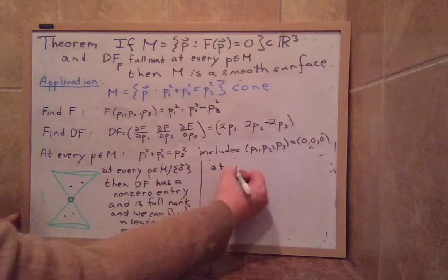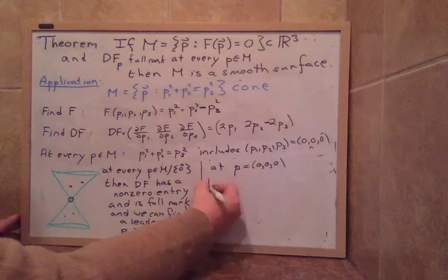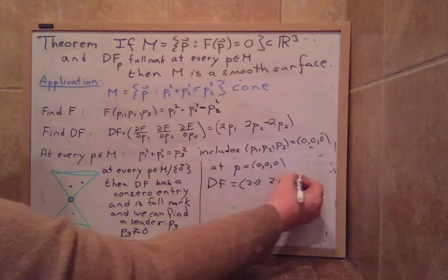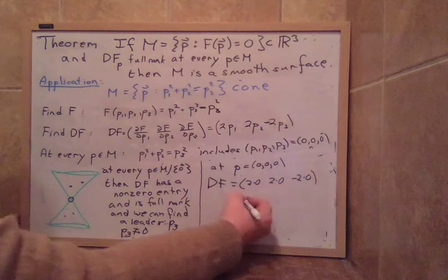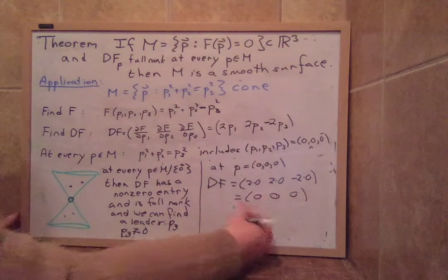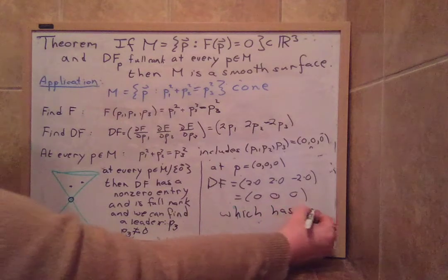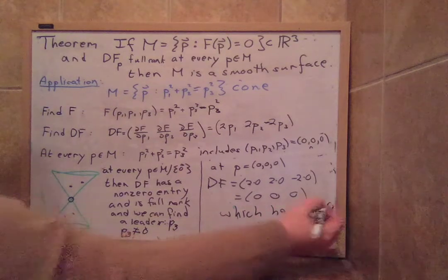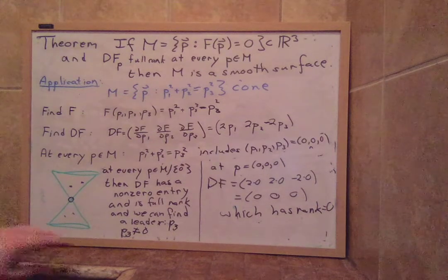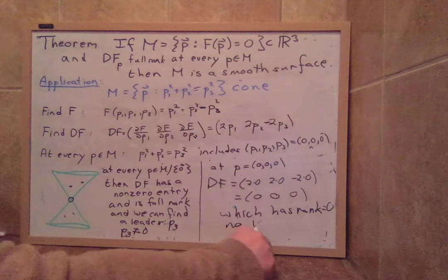But at p equal to 0, 0, 0, df equals 2 times 0, 2 times 0, minus 2 times 0, is 0, 0, 0, which has rank 0. It's a 0 matrix that has rank equal to 0. There's no non-zero rows. There's no leaders. It has no leaders.